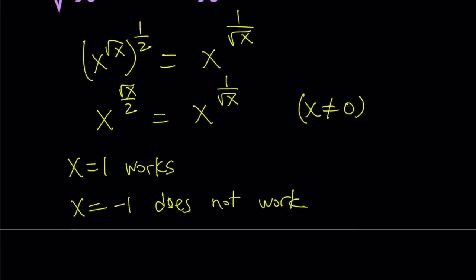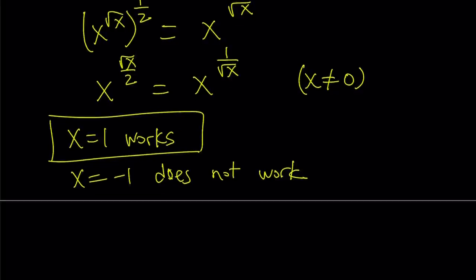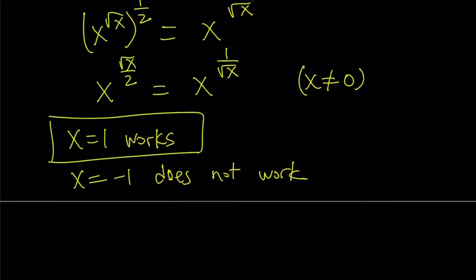And now at this point, x equals 1 works, so that's one of the solutions. And now we can proceed with the usual stuff. Since two exponentials equal each other, we're going to check their, we already checked the bases and they're equal, so exponents are going to be equal. We get square root of x over 2 equals 1 over square root of x.